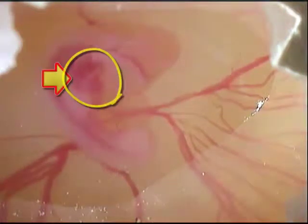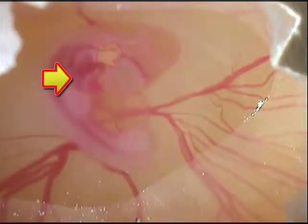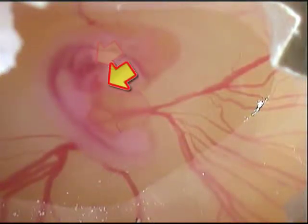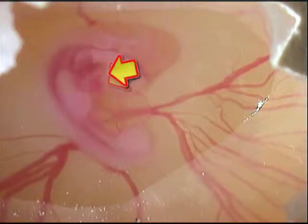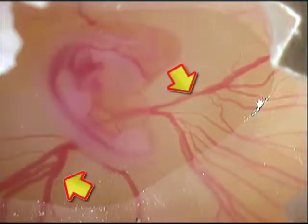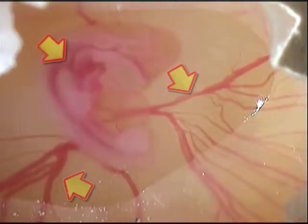It includes a sinus venosus, an atrium, a ventricle, and a truncus arteriosus. Blood flows into the dorsal aorta and then over the yolk sac. Blood returns to the heart via the cardinal veins that drain into the sinus venosus.